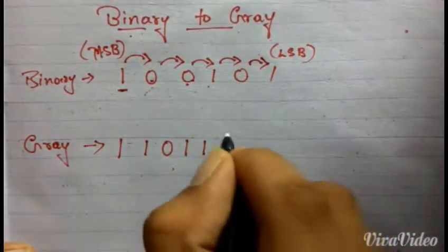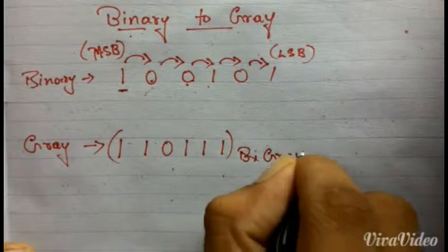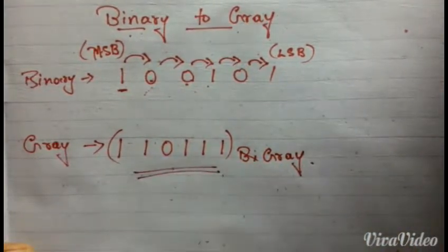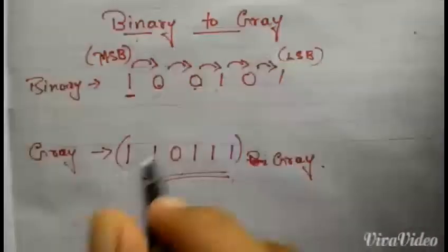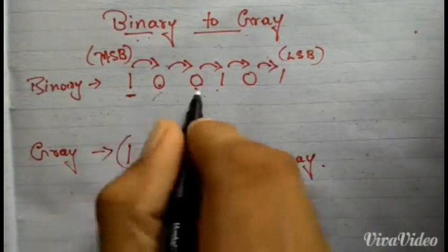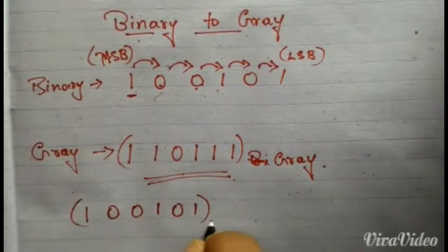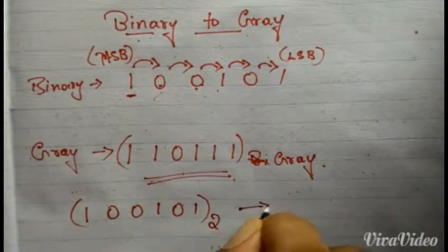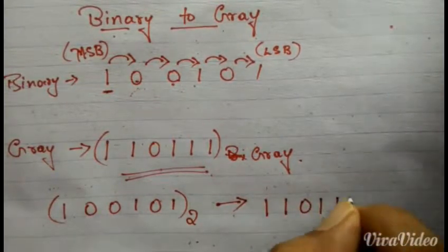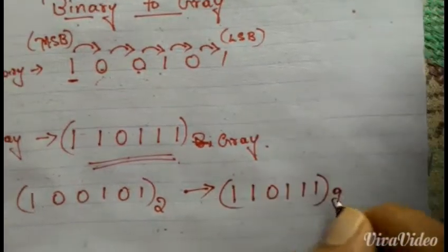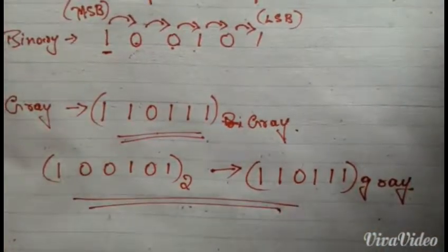So the binary code 10010101 is equal to 110111 in gray code. Thanks for watching.